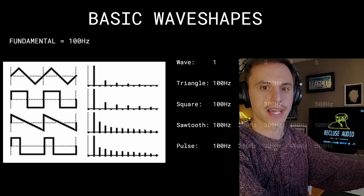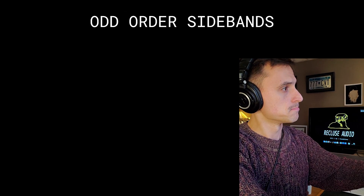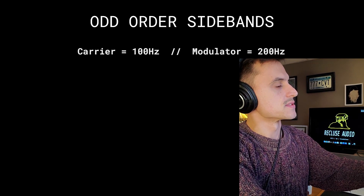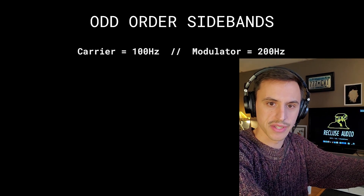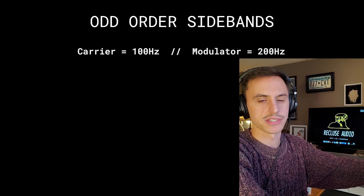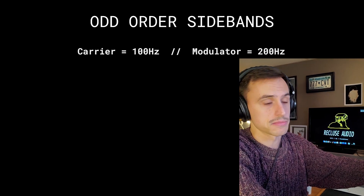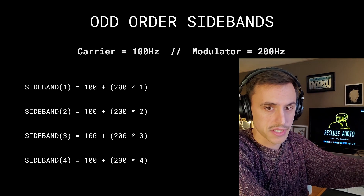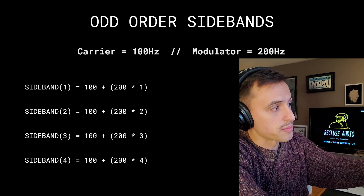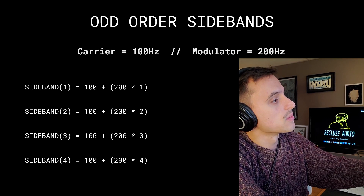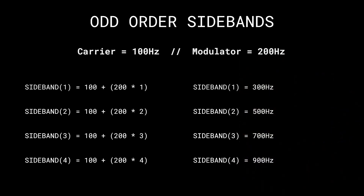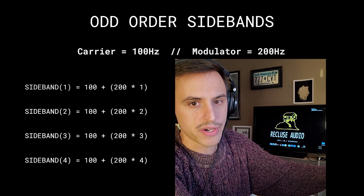So how can we recreate this with the sidebands of FM synthesis? Let's do odd-order sidebands first. Let's say the carrier is 100 Hz and the modulator is 200 Hz — the modulator is twice that of the carrier. Sideband 1: 100 plus 200. Sideband 2: 100 plus 200 times 2. 100 plus 200 times 3. 100 plus 200 times 4. We get 300, 500, 700, 900 — the same as the odd-order harmonics of a square or triangle wave.